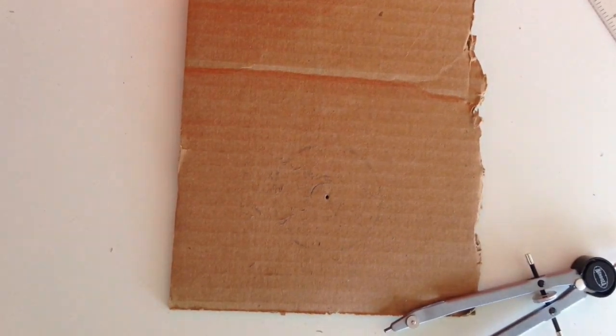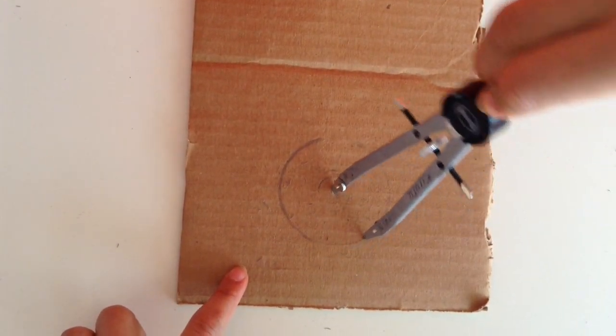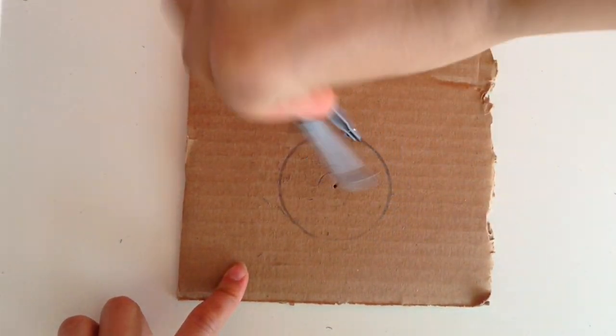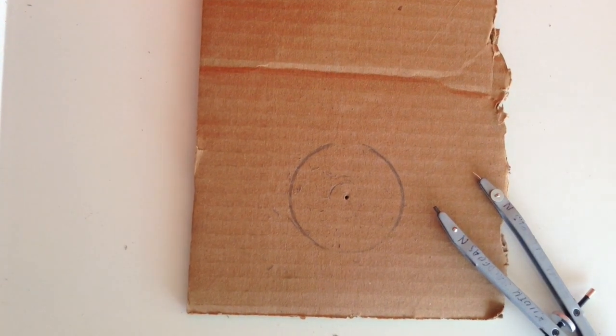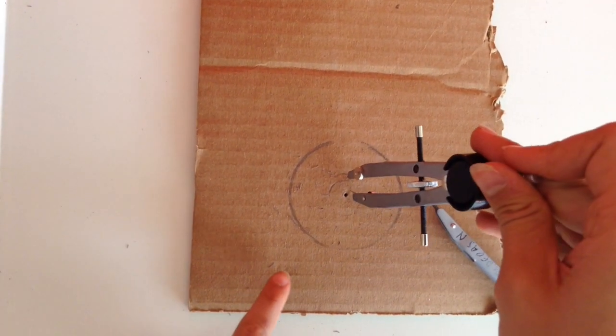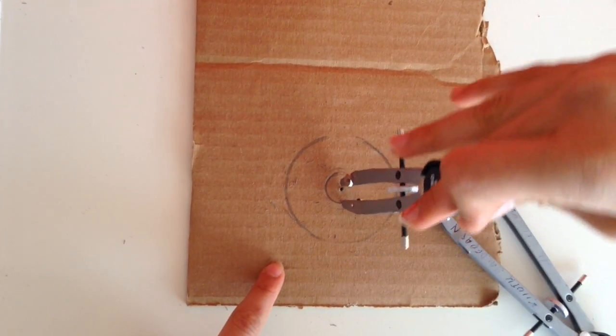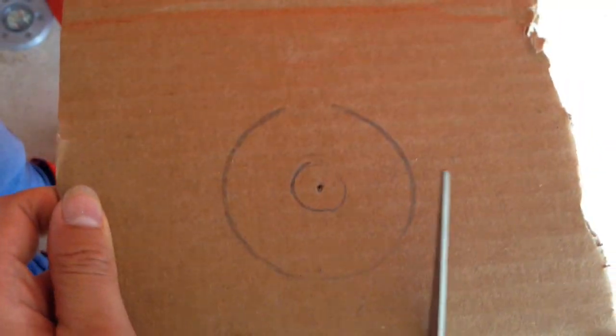Now you have three circles. Now you have to do a circle with a radius of 3.2 cm like this and cut this. And inside of this circle, you have to do another with a radius of 1.2 cm and cut it.